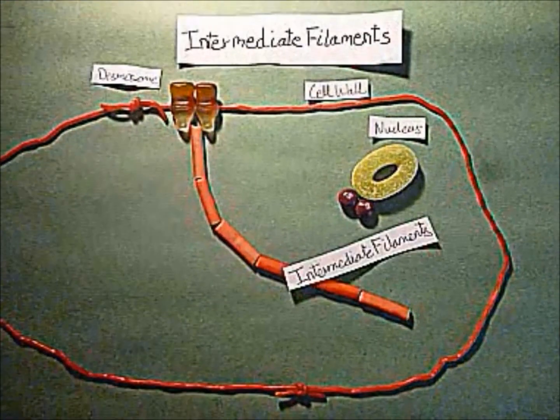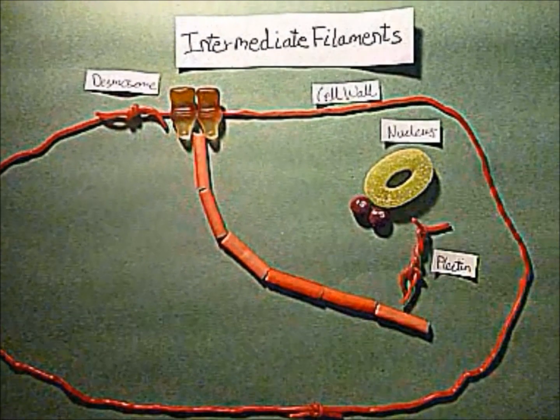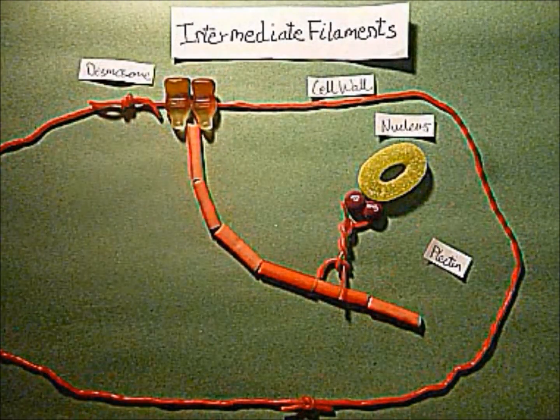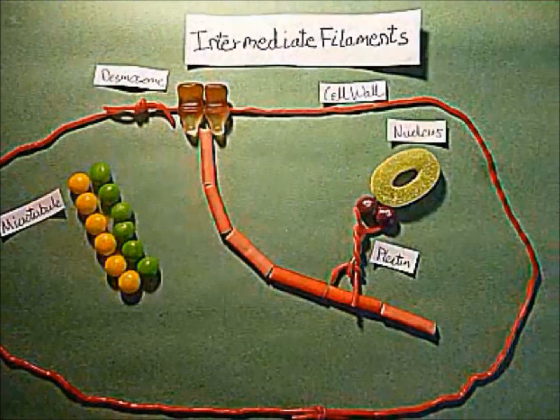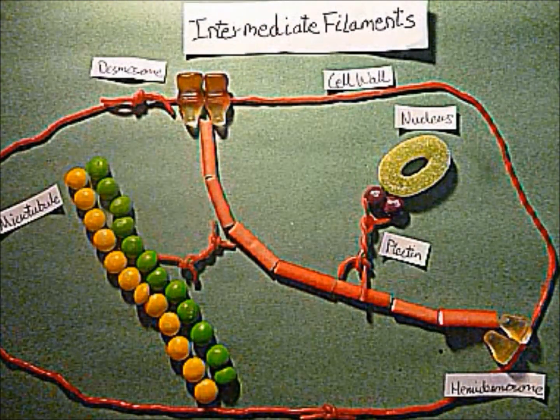They extend throughout the cell from desmosomes and hemidesmosomes spanning the cell surface membrane. Connections to other cytoskeletal elements and the nucleus are made by cross-bridge proteins, most notably plectin.